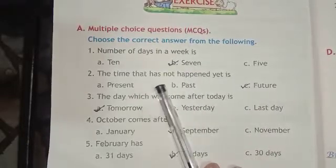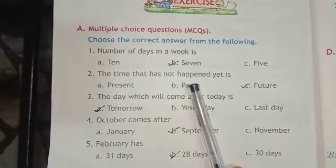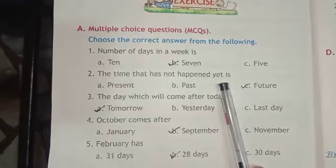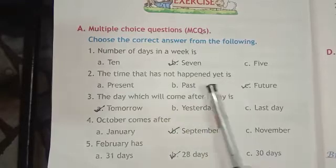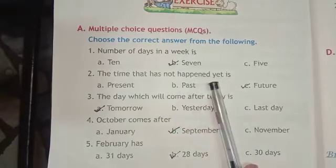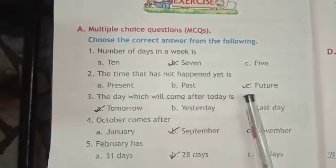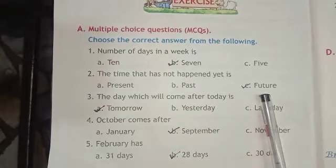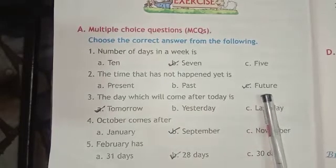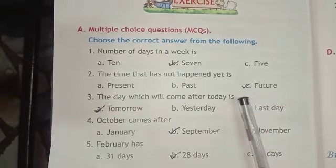The time that has not happened yet is: present, past, or future? Future means the time that is yet to come.